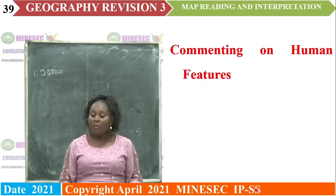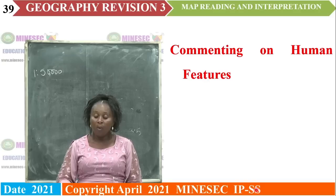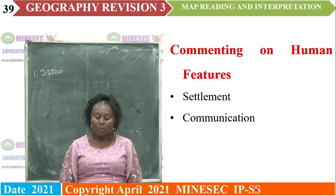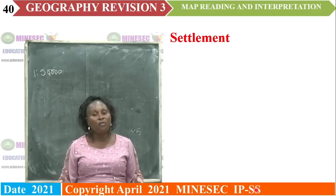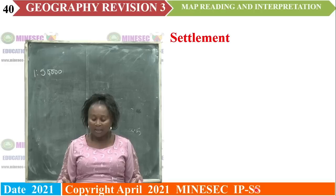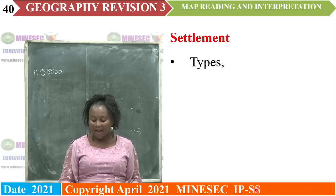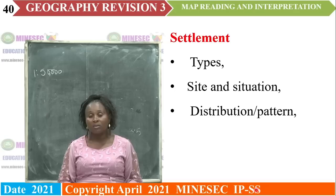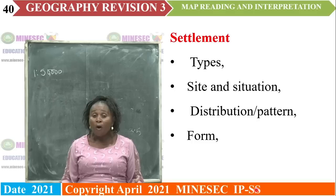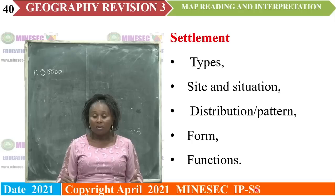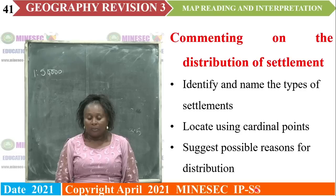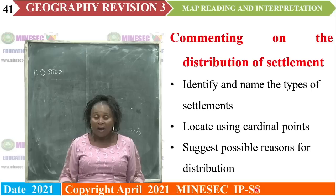Commenting on human features. The human features we comment on in a topographic map are settlement, communication, and land use. Settlement is any form of human habitation — it may be a hamlet, a village, a town, or a city. In it, we would identify the types of settlement, site and situation, distribution or pattern of settlement, the form that the settlement has taken, the functions, and we suggest possible reasons why they are where they are.